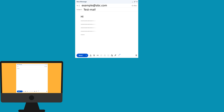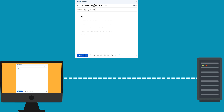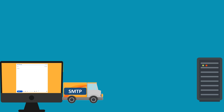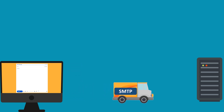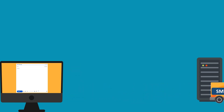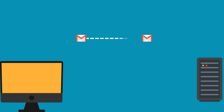Your email client, like Outlook, helps you prepare your email. When you hit Send, it contacts your email server. The email client uses SMTP to transmit the outgoing message to the email server. When an email is sent within the same domain, such as from one Gmail account to another, SMTP facilitates communication between the sender's email client and the email server.